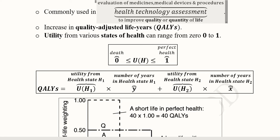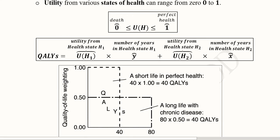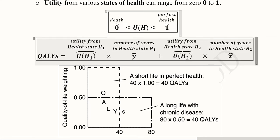On this scale, death is represented with 0 — no utility — and perfect health is represented with 1. Somewhere in the middle there are various states of health showing various levels. Now we consider a situation where there are two states of health: h1 and h2. What we can do is take the number of years in the first state of health and multiply it with the utility of that state.